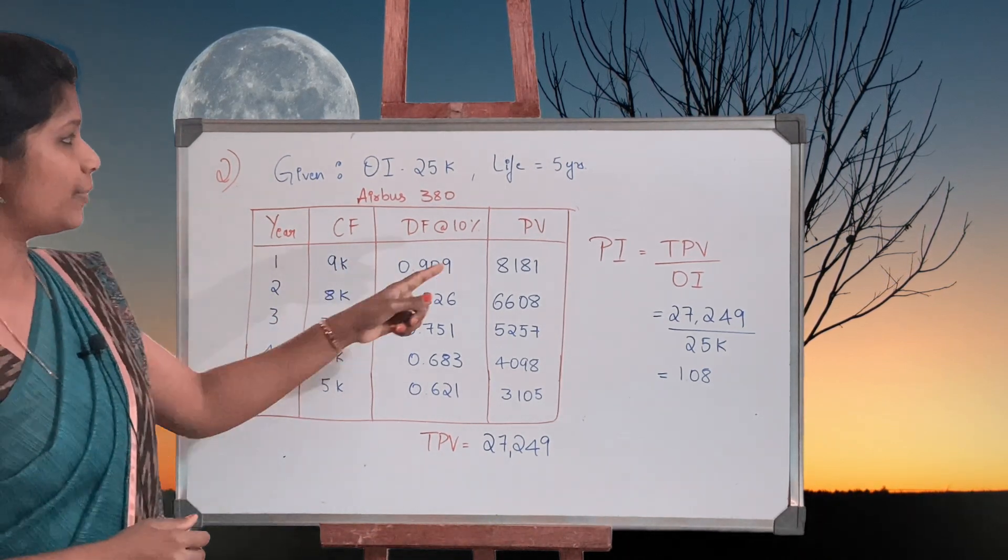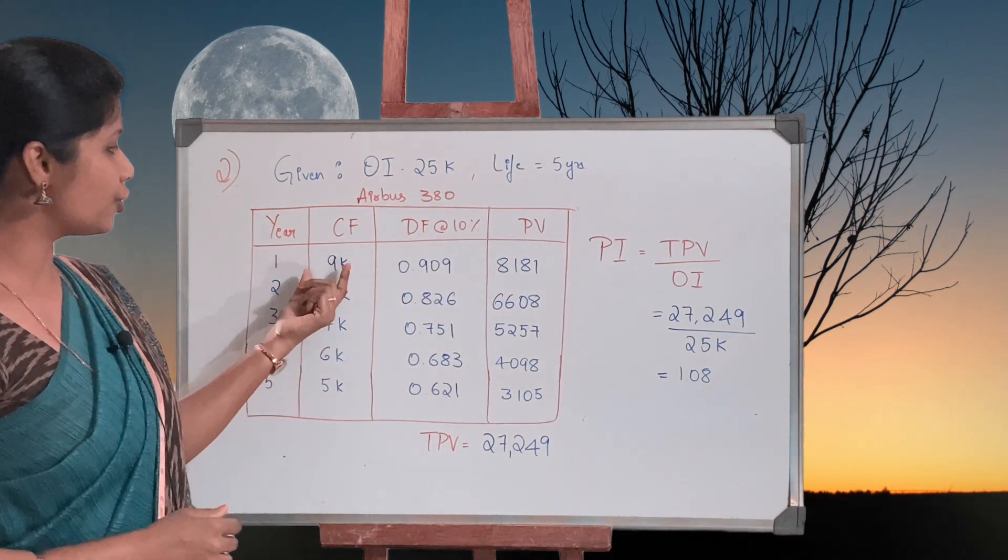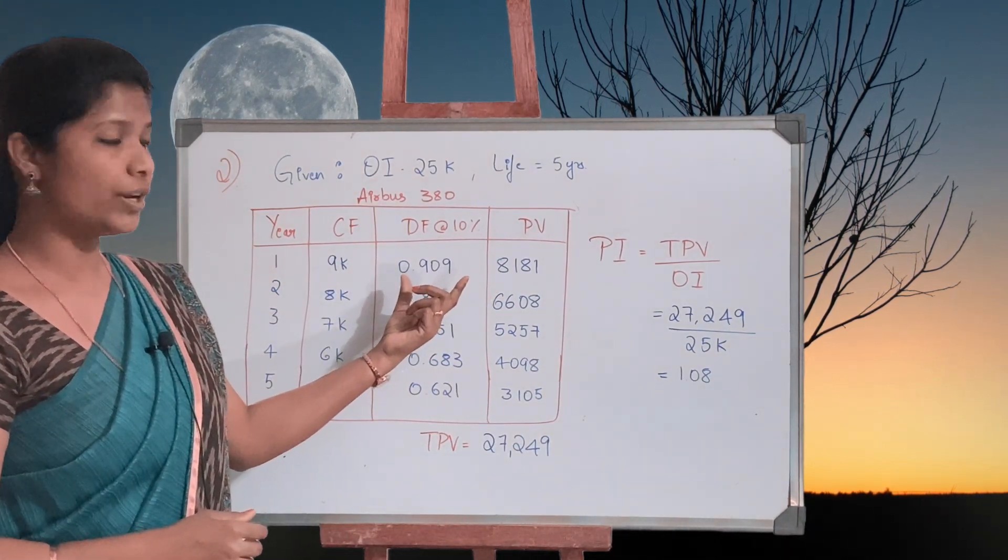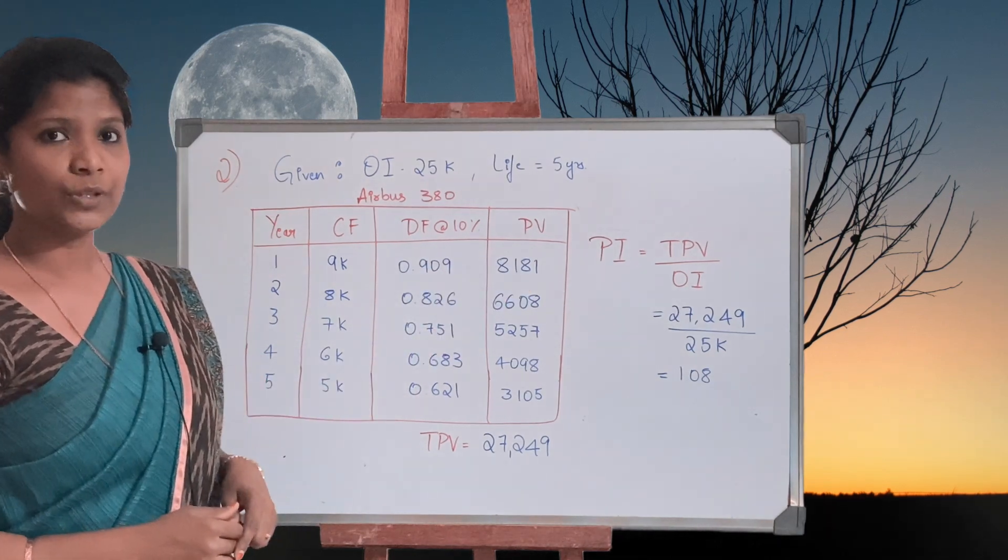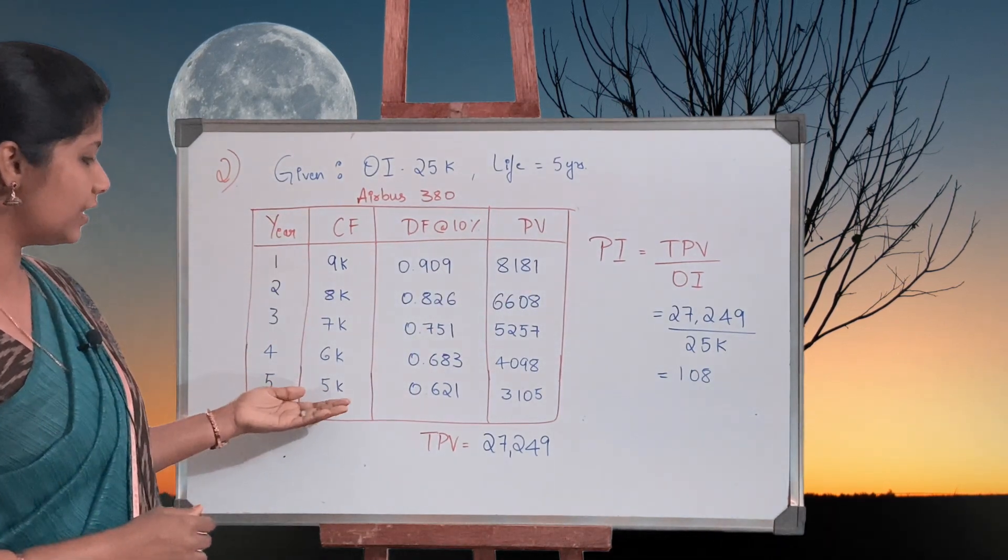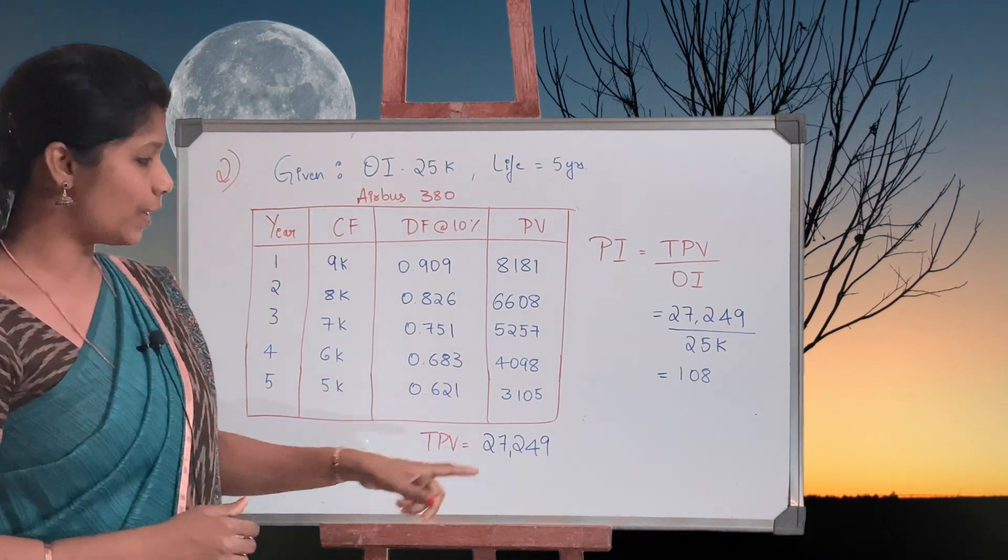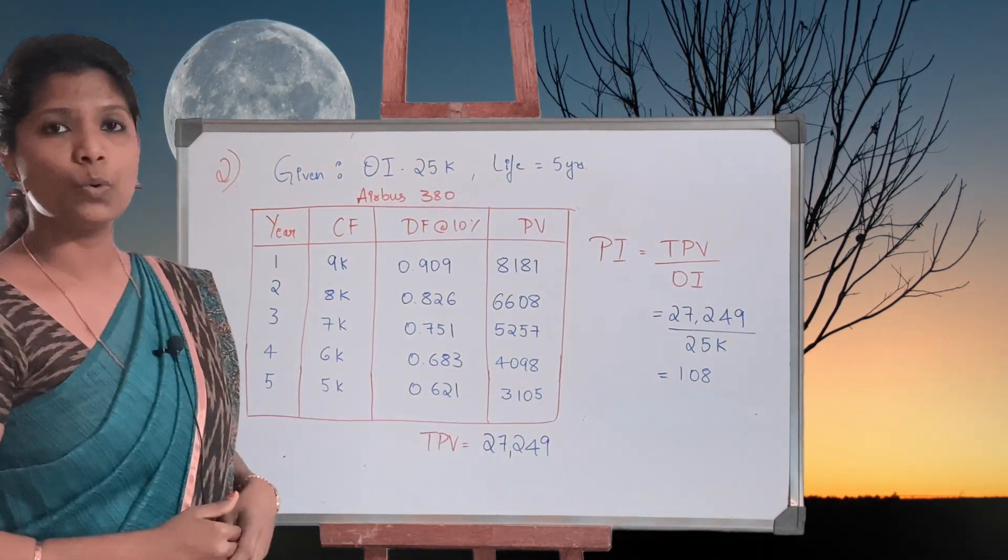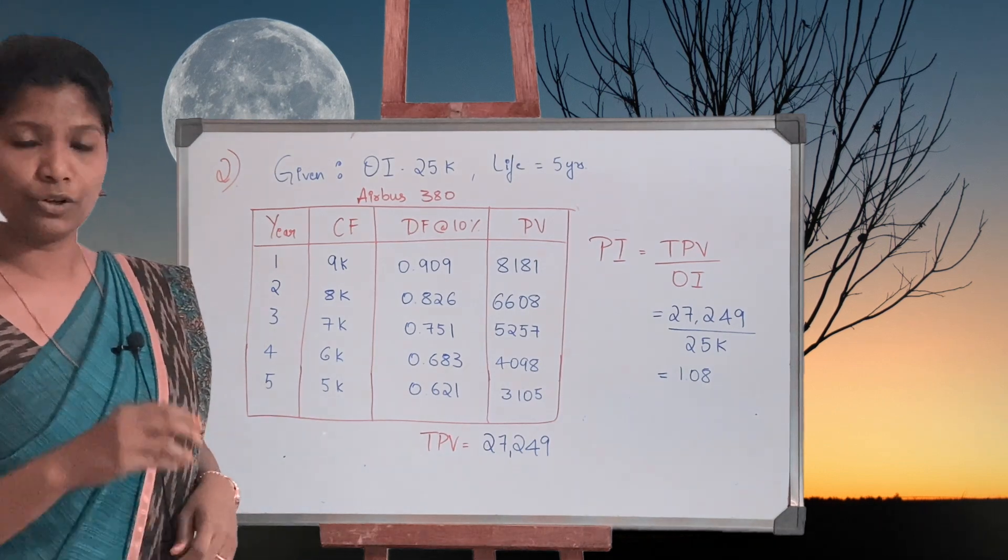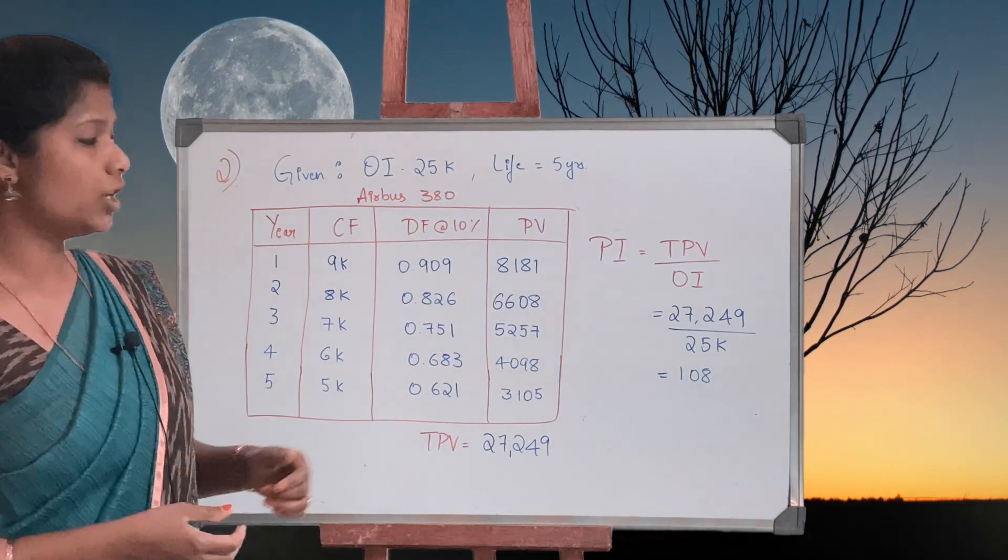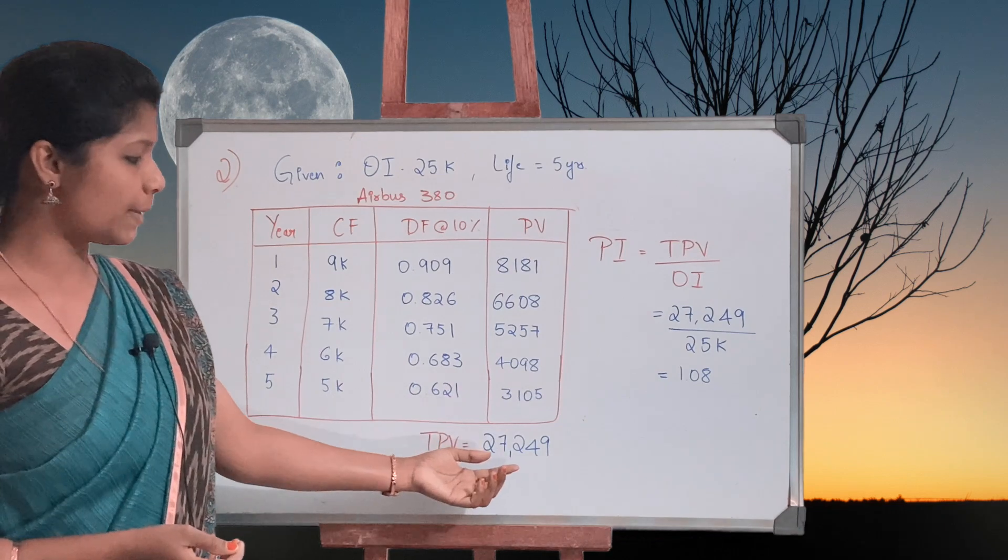Discount factor at 10 percent rate of interest is provided for all the five years. Present value is multiplication of nine thousand multiplied by 0.909, which is 8,181, and so on. Last one, five thousand multiplied by 0.621 comes up to 3,105. We need total present value, so we are going to total the last column.